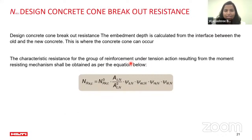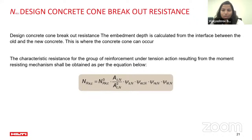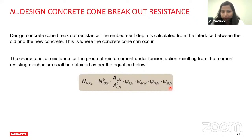The concrete cone breakout resistance is a major differentiating factor compared to the previous theory. Because TR069 combines reinforced concrete theory with anchor theory, this formula is taken from the anchor theory — in the rebar theory previously, concrete cone breakout was not considered. The influencing factors in this formula, which can be obtained from the relevant ETA, include edge distance and concrete cover, whether the concrete is cracked or uncracked, and eccentricity of the rebar relative to the edge.